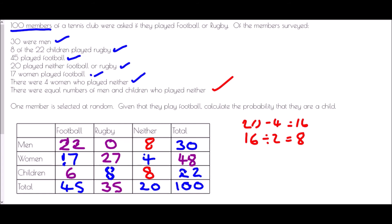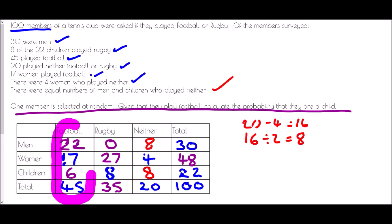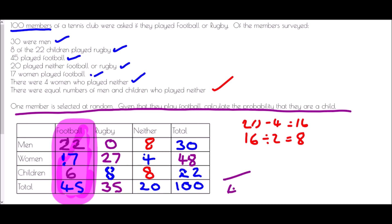We've completed the two-way table, but this on its own has not completed the question — we have a probability question remaining. One member is selected at random, given that they play football. Straight away I'm highlighting the piece I'm interested in: given that they play football means we're in the football section of the table. How many people play football? There are 45. Of those 45 people who play football, how many of them are children? There are 6. So the probability is 6 out of 45. If we simplify by dividing both by 3, that is 2 out of 15.